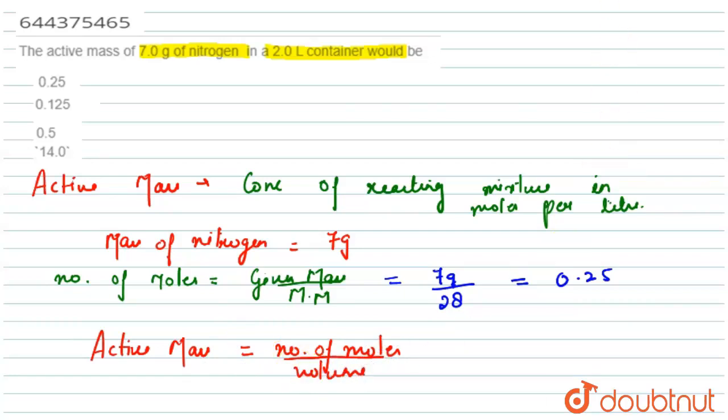In this question, we have just calculated the number of moles, it is equal to 0.25. Also, the volume given is 2 liter. This is equal to 0.125.